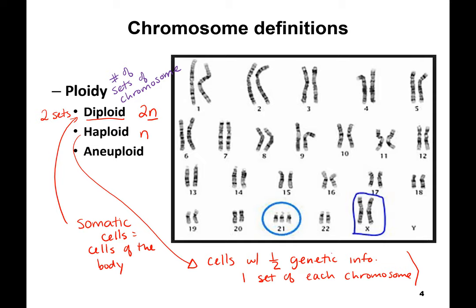Haploid cells are your gametes — you will hear this term a lot — which is your egg or sperm. Humans get their chromosomes one set from mom and one set from dad. So the egg from mom and the sperm from dad each have to have only half the number of chromosomes, so that when you combine them, you become a diploid organism with two of everything.